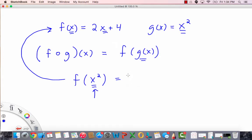So we write the 2, and instead of an x, we have to replace it with x squared. And then, of course, we need the plus 4. So this is equivalent to f of g of x.